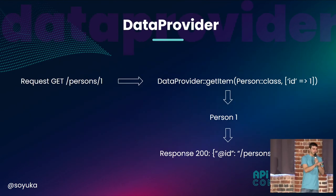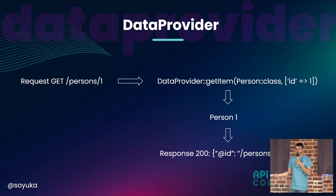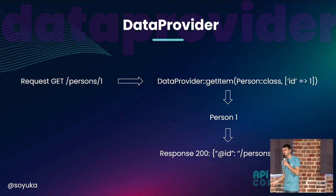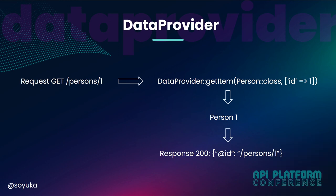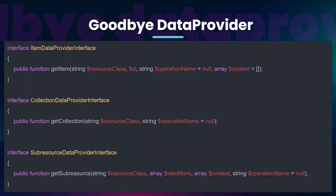Let's go back to today. Inside API Platform, you have a data provider. A data provider is where you say: I have a request, I want to get some data from the database, for example. And you are calling data provider get item. You can implement this interface yourself to fetch data. The interface today looks like this — there are three interfaces with this item and collection difference.